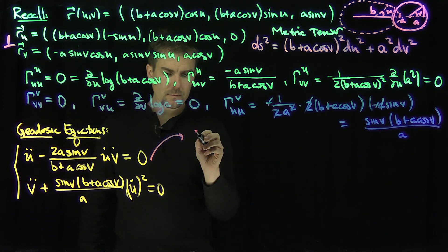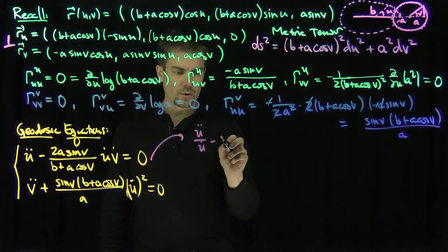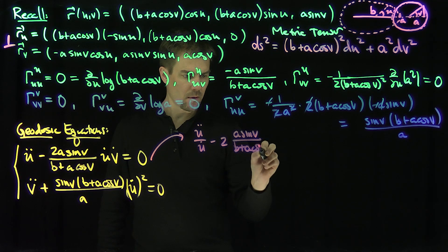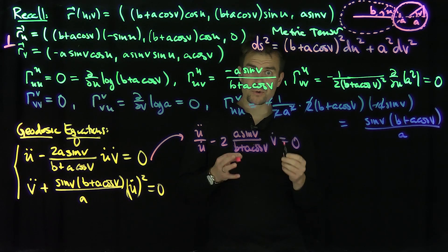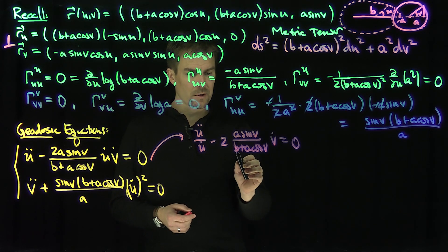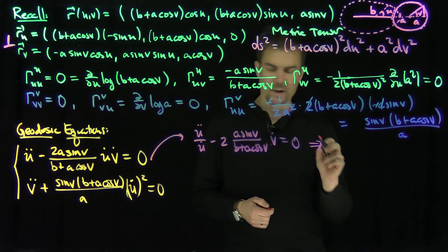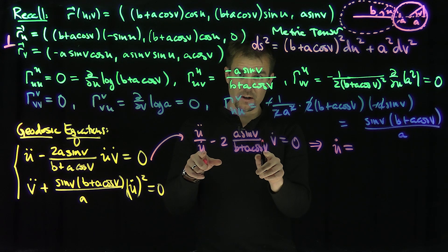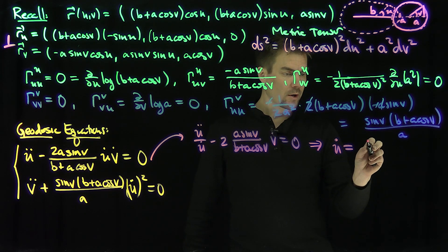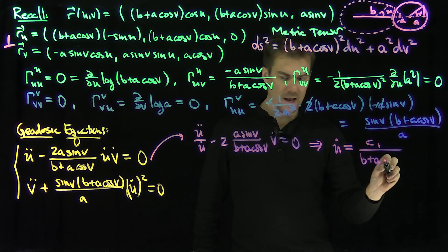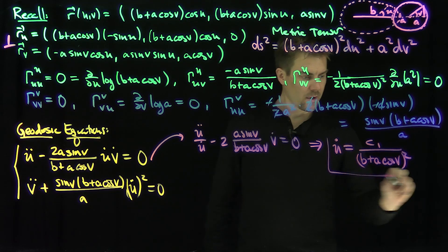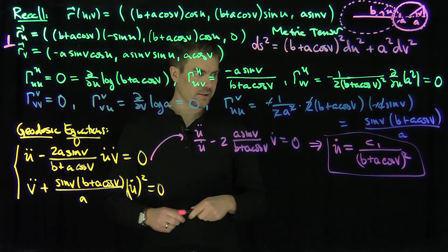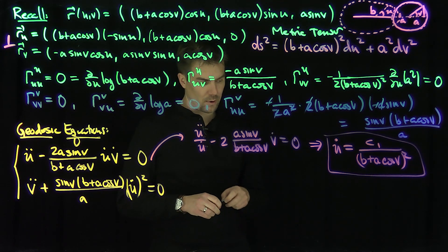If v̇ ≠ 0, the first equation tells me that ü/u̇ - 2a·sin(v)/(b + a·cos(v))·v̇ = 0. Both terms are logarithmic derivatives — this is the logarithmic derivative of u̇, and this is the logarithmic derivative of (b + a·cos(v))^{-2}. So if two logarithmic derivatives add to zero, those functions must be proportional to each other, giving u̇ = c₁/(b + a·cos(v))².